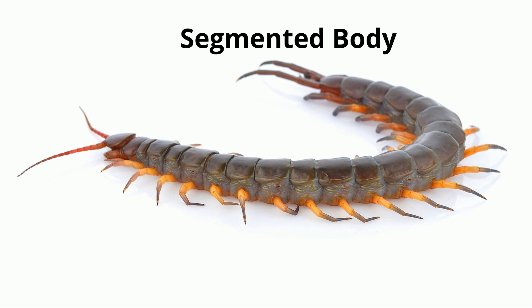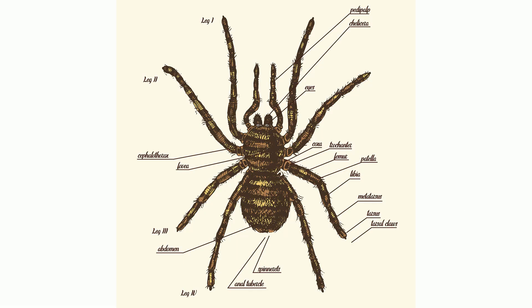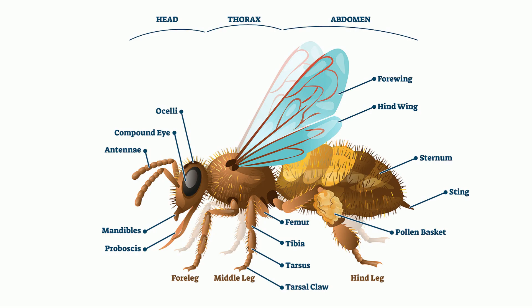Bodies with segments. If you take a look at an insect, you will notice that their body is made up of more than one segment. A spider has two segments. An insect has three: a head, thorax, and abdomen.